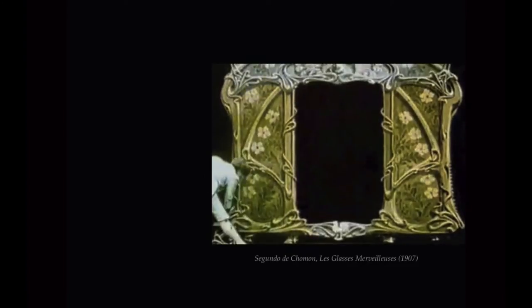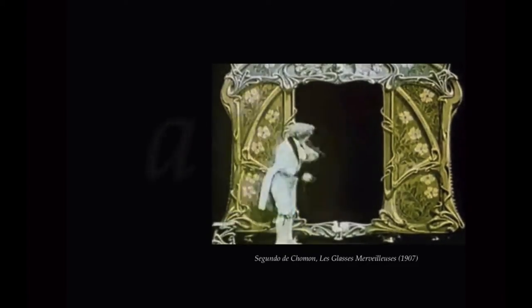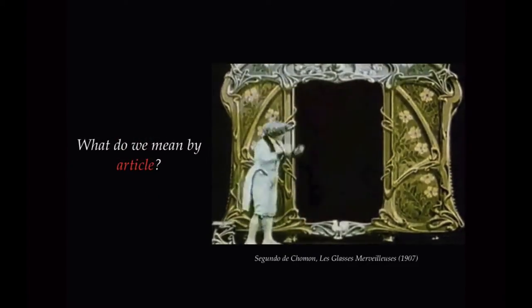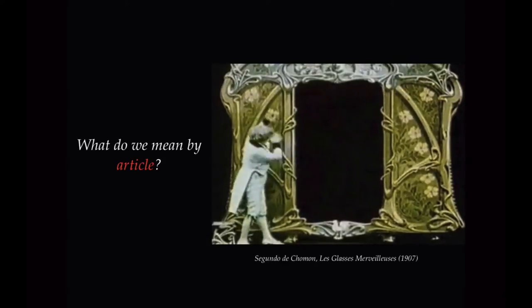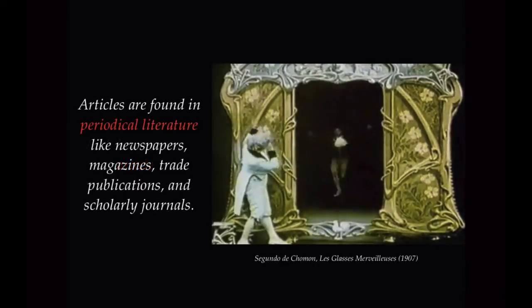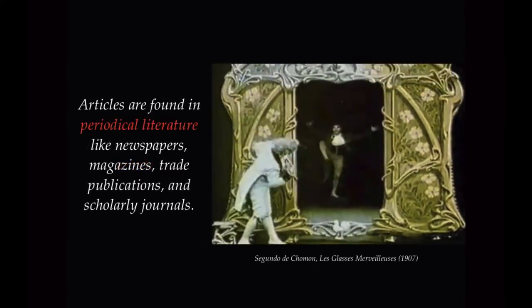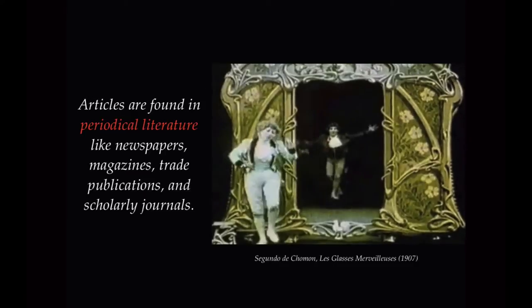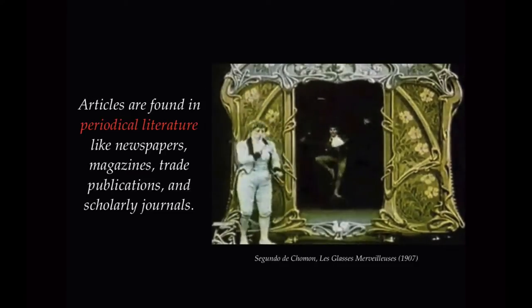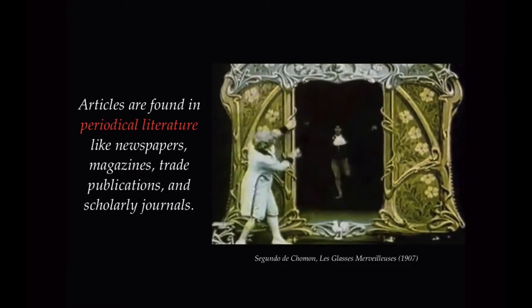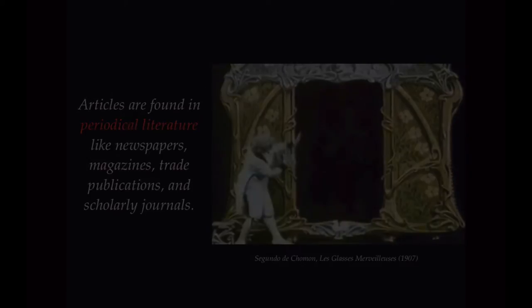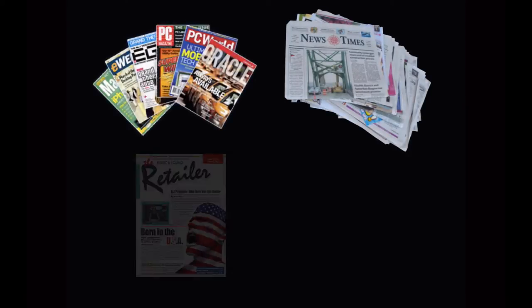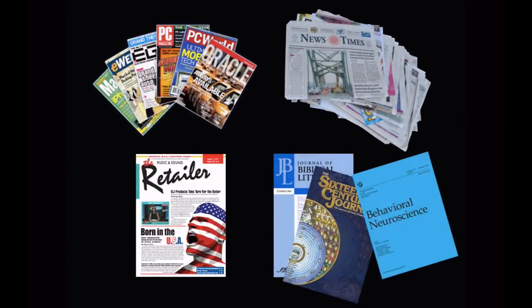First, it's important to understand what we mean by 'article.' Articles are a kind of periodical literature, which simply means that articles are found in resources that are published daily, weekly, monthly, or at different times throughout the year. Periodical literature includes newspapers, magazines, trade publications, and journals.